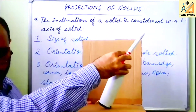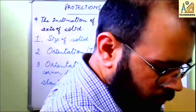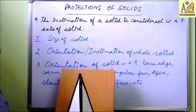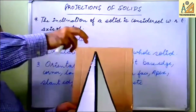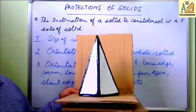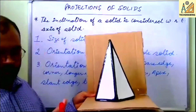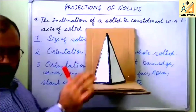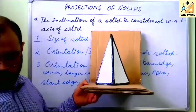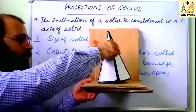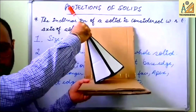Similarly, if it is inclined to HP and parallel to VP, you have to see the axis only. For example, this is a pentagonal pyramid — parallel to VP and perpendicular to HP — because its axis is parallel to VP and perpendicular to HP. You have to see the axis only. Although you see these sides, these are not parallel or perpendicular; they are inclined. If the pyramid is positioned differently, you just see it is inclined to HP and parallel to VP.